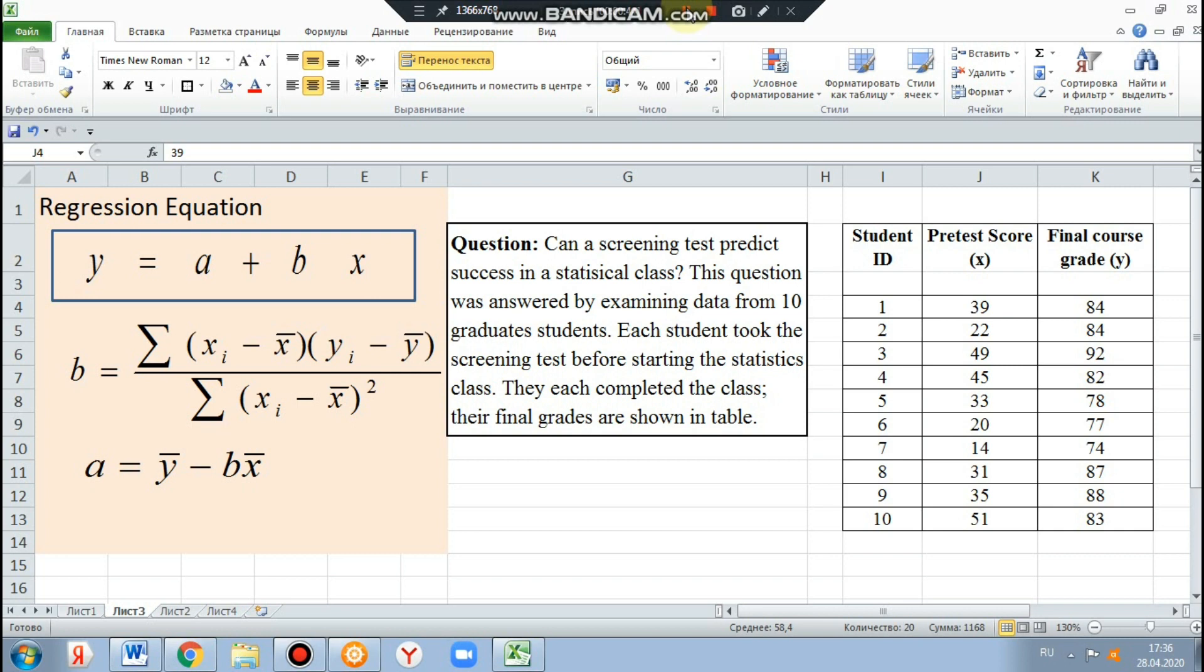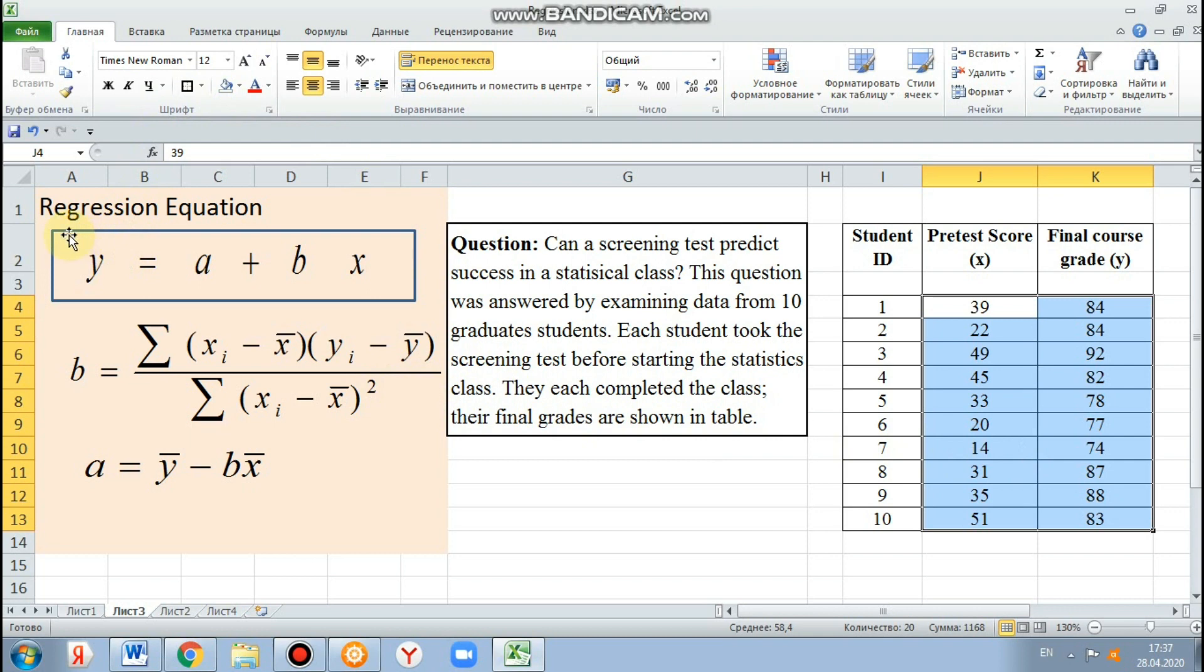Simple linear regression is used to estimate the nature of the linear relationship between two continuous variables, where one is regarded as the outcome and the other predicts the outcome. It gives the equation of the straight line through the observed data.